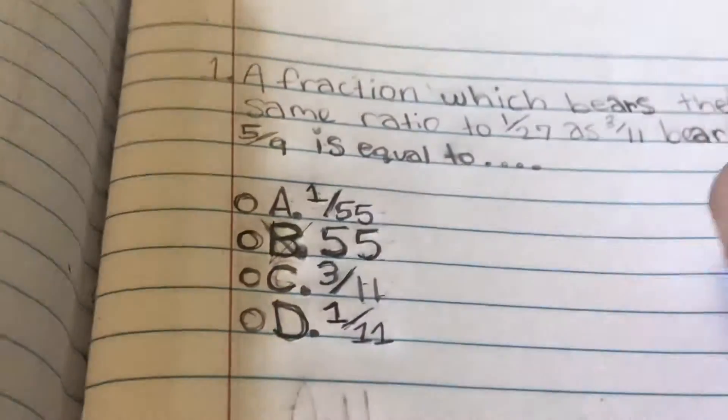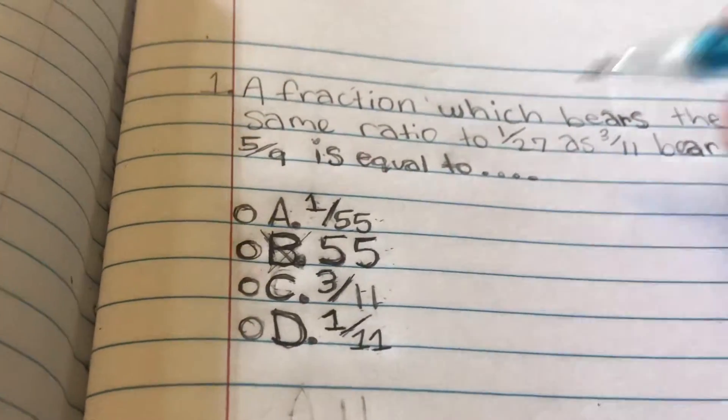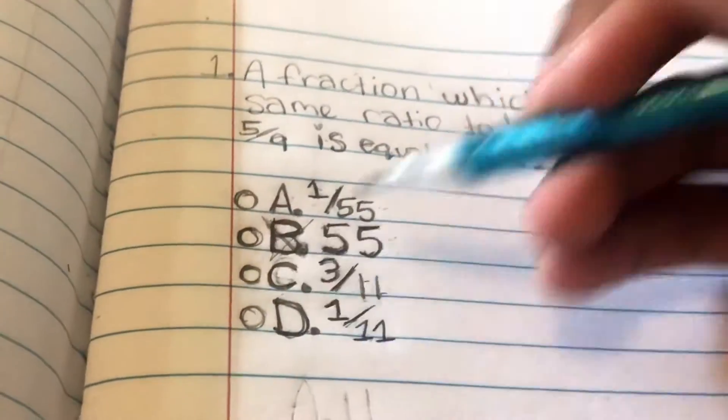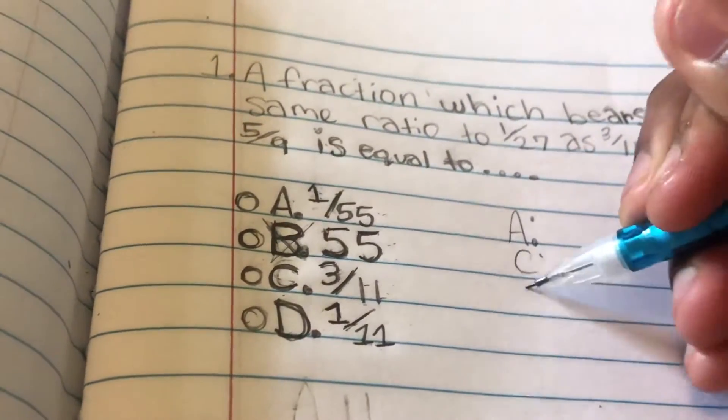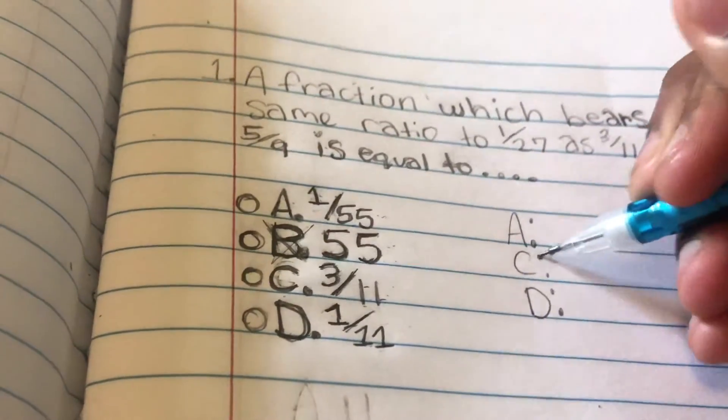Now since we have that marked out, what we can do is we can put A, C, and D over to the side right here. I'll just put it just like this: A, C, and D. Okay, so now we take a look at A.